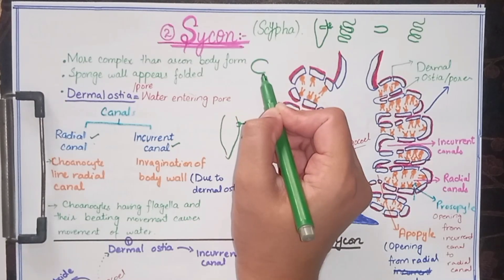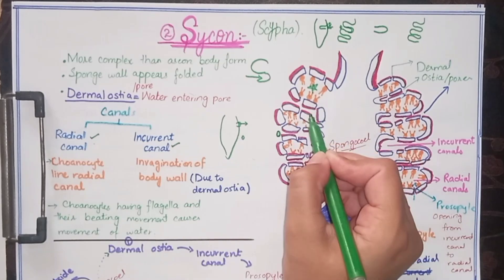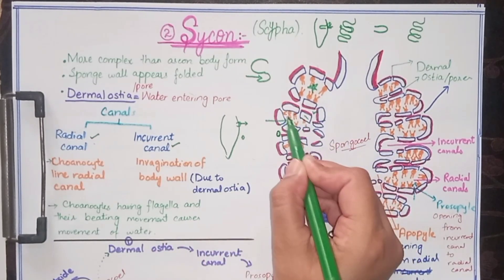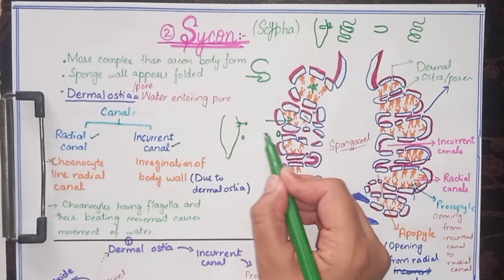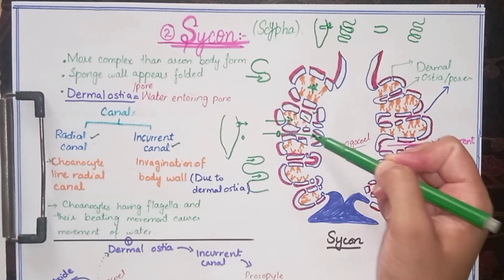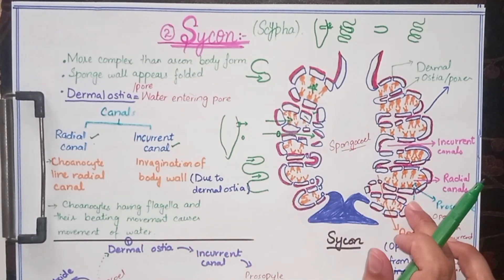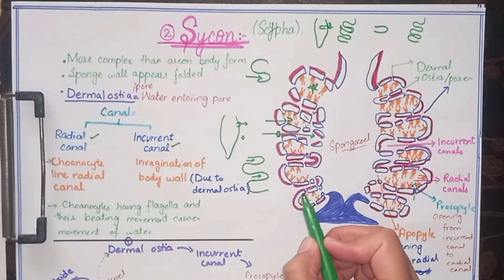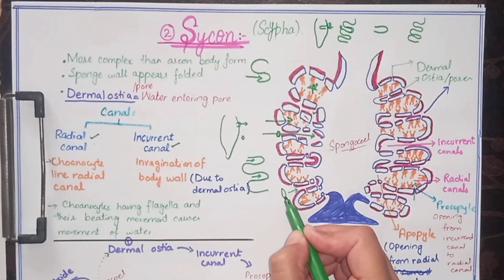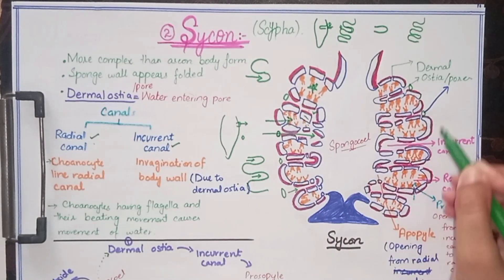The radial canal and the incurrent canal lie in an alternate manner — these two canals are present in Sycon. Moreover, the incurrent canals develop due to the dermal ostia present at the top of the incurrent canals.